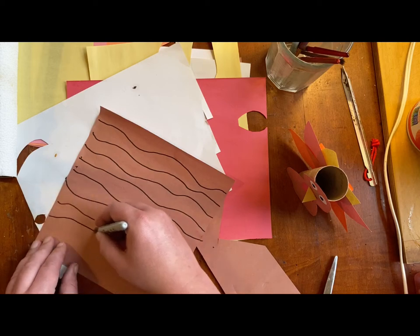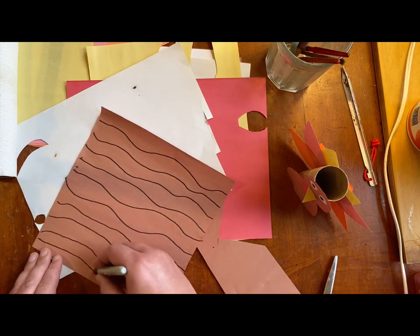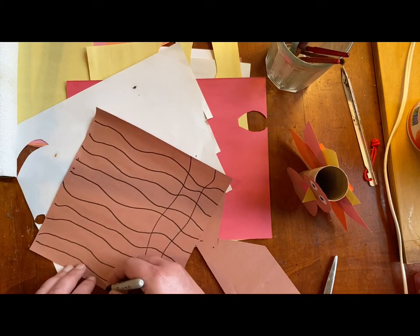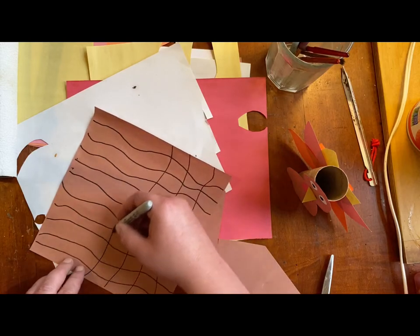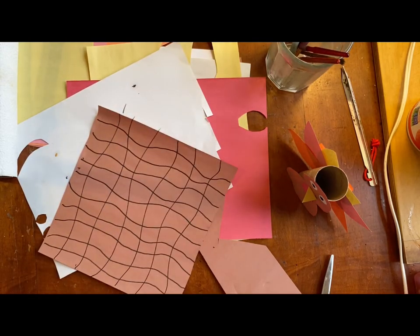And I'm going to decorate it first. I am going to make lines so it will look like a basket when I roll it up into my horn of plenty. I'm going to make both vertical and horizontal lines. It's okay if they're a little wavy. They don't have to be straight.